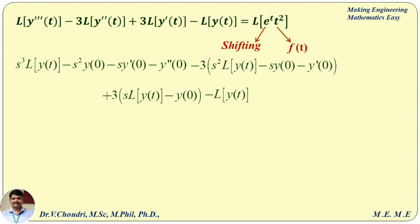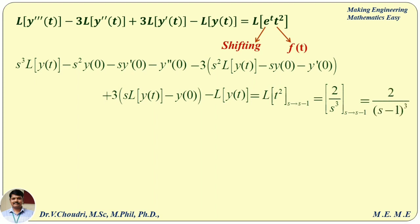Then, minus L{y(t)} remains as is. For the right-hand side, using the shifting property, we first find the Laplace transformation of t², which equals 2/s³, and then replace s by s−1 to get 2/(s−1)³.